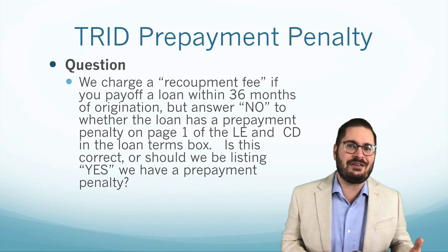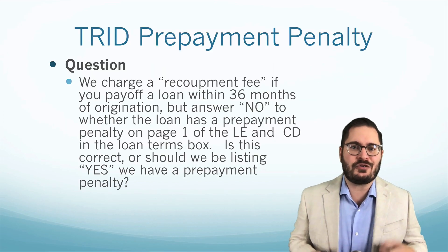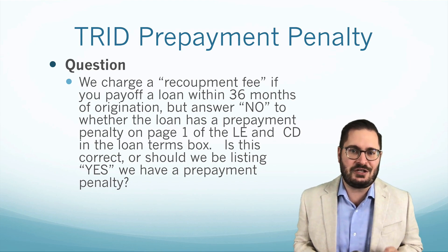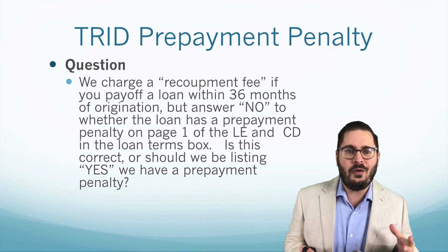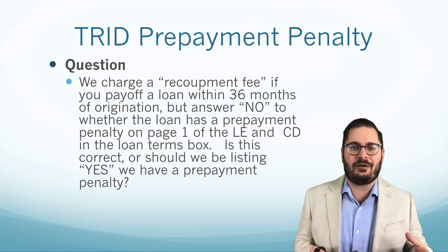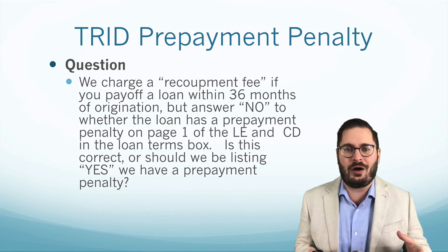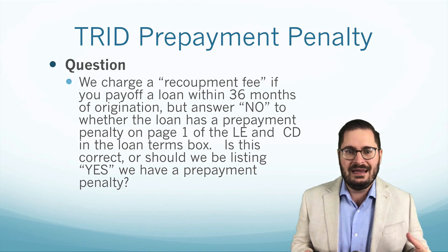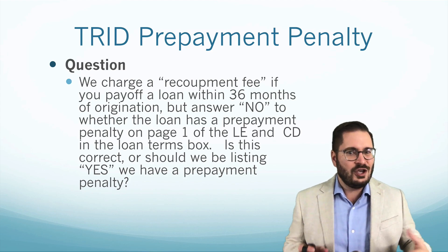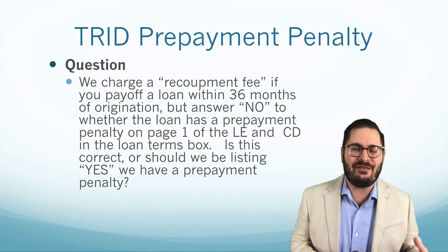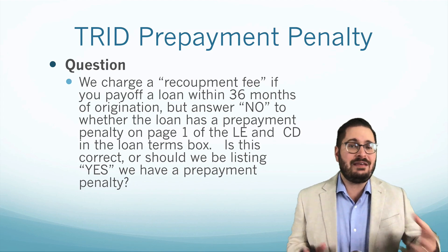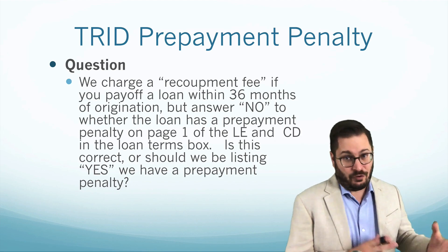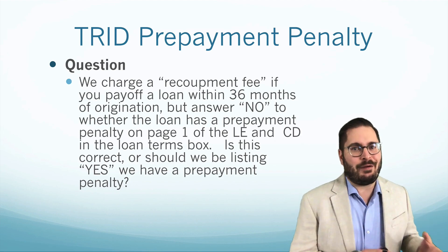The question I received was this: We charge a recoupment fee if you pay off a loan within 36 months of origination, but we answer 'no' to whether the loan has a prepayment penalty on page one of the loan estimate and closing disclosure in the loan terms box. Is this correct? Or should we be listing 'yes, we have a prepayment penalty?' So basically they're charging a fee if a loan is paid off early, and they want to know: is this a prepayment penalty?